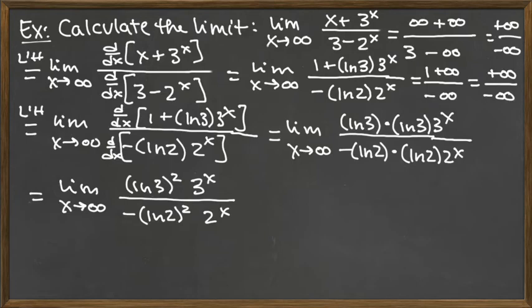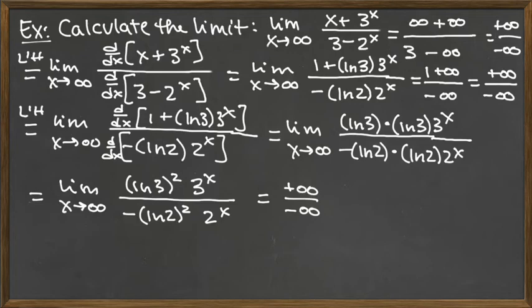Before we continue, we really need to think about what's going on. We could reassess the indeterminate form, and we would still get positive infinity over negative infinity. But L'Hopital's rule is really not going to help us anymore. It helped us by getting rid of the X on top and the 3 on the bottom, but past that, every time we apply L'Hopital's rule we would just be getting extra factors of natural log of 3 on top and natural log of 2 on the bottom. That's never going to get us anywhere — it's not going to be wrong, it's just not going to be helpful.